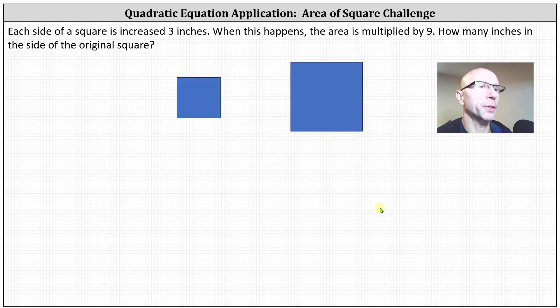Each side of a square is increased three inches. When this happens, the area is multiplied by nine. How many inches is the side of the original square?